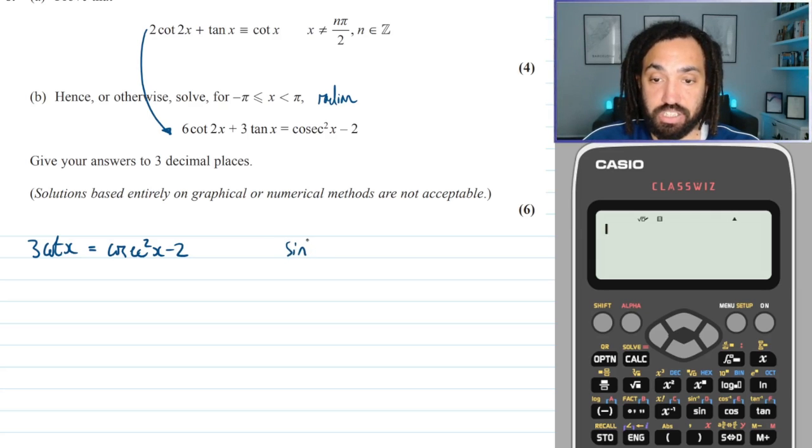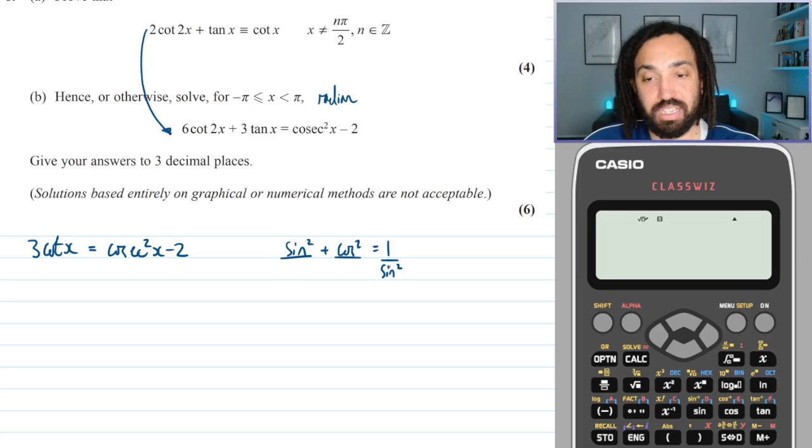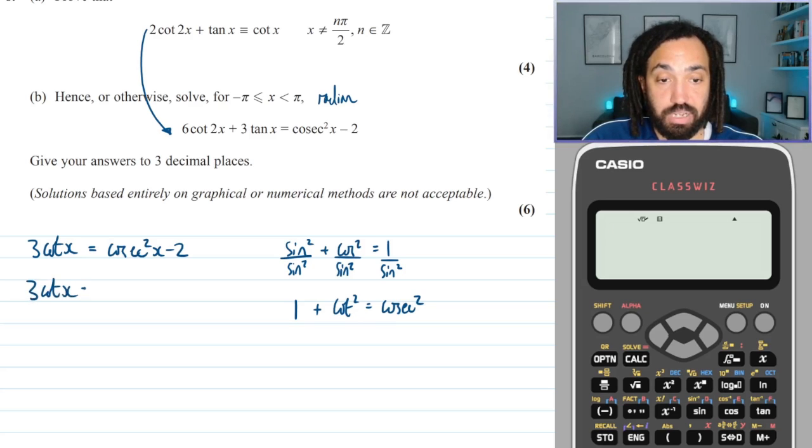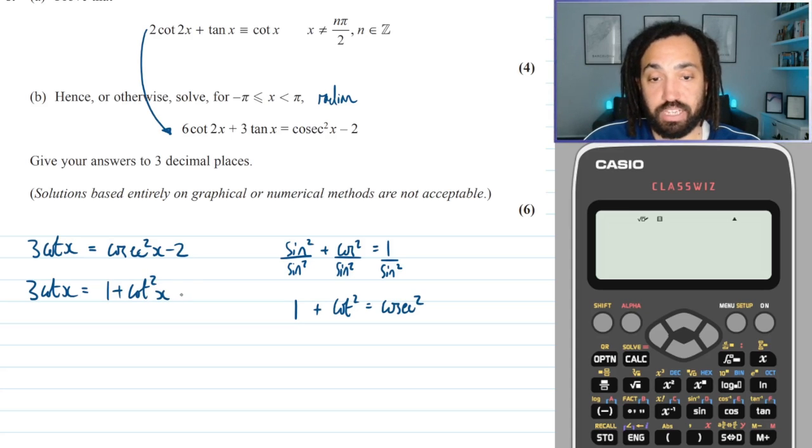So there is a relationship between cosec squared and cot squared which obviously I know, but if not you can always just derive it yourself by writing out sin squared plus cos squared is equal to 1. Now because I want cosec squared I can divide by sin squared to get my cosec squared and I just have to do that for every term. So that gives me cosec squared and that gives me cot squared and that gives me 1. So I can just replace this cosec squared over here with 1 plus cot squared x. Perfect, and that's minus 2.